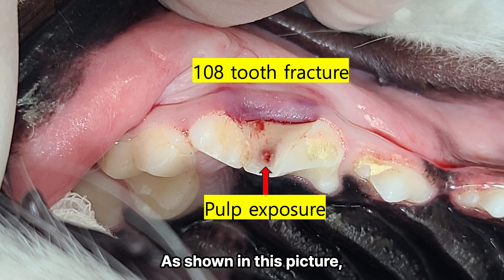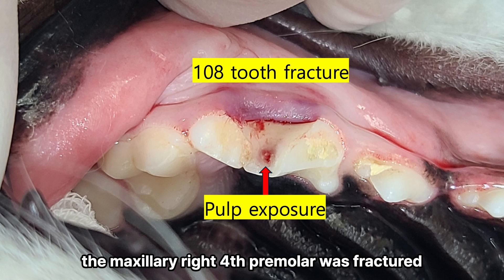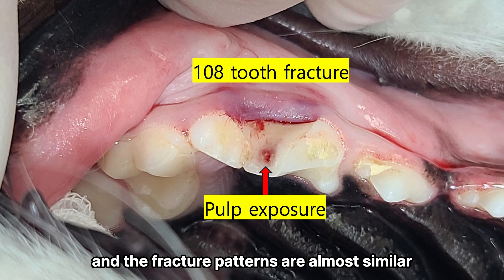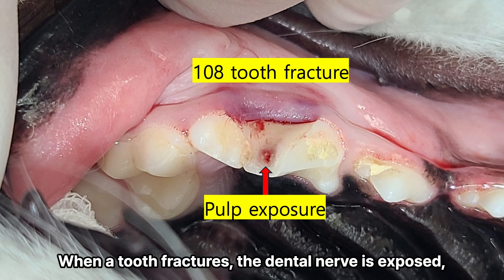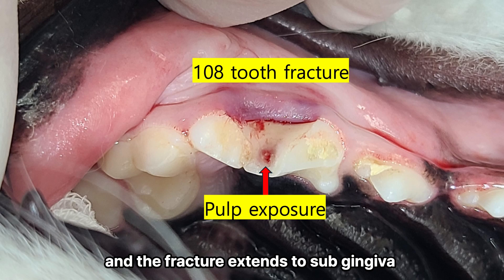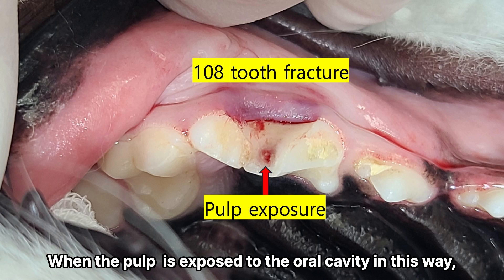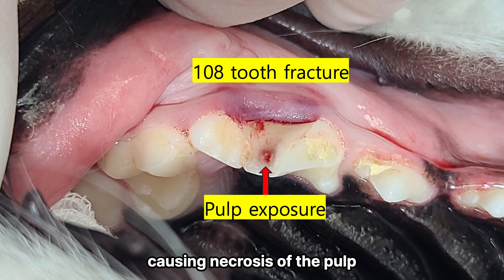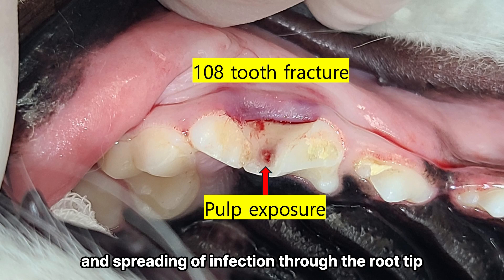As shown in this picture, the maxillary right fourth premolar was fractured. The most commonly fractured teeth and the fracture patterns are almost similar. When a tooth fractures, the dental nerve is exposed and the fracture extends to sub-gingiva. When the pulp is exposed to the oral cavity in this way, infection by oral bacteria occurs, causing necrosis of the pulp and spreading of infection through the root tip.